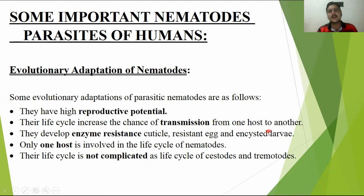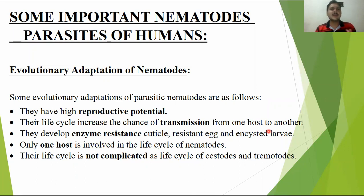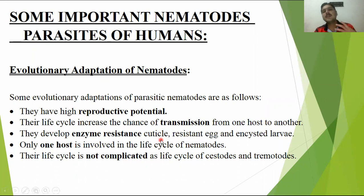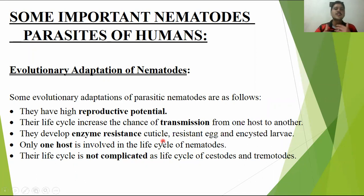The life cycle is complex, which makes transmission between hosts very fast and easy — that is also a reason for their success. They also develop an enzyme-resistant cuticle. The cuticle covering is the most important thing in their body. It protects them from the host's digestive enzymes, so the digestive enzymes will not damage them and they remain alive.